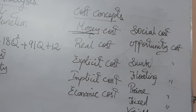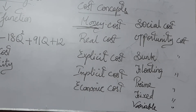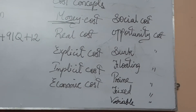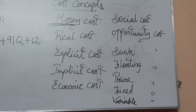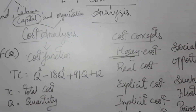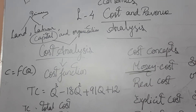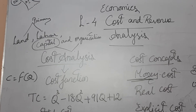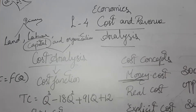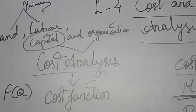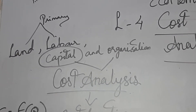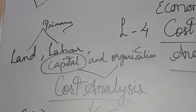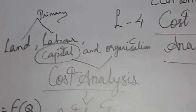Real cost refers to the payment made to compensate the efforts and sacrifices of all factor owners for their services in production. This includes not just money but everything — labor services, the organizer's thinking — all such contributions come under real cost.